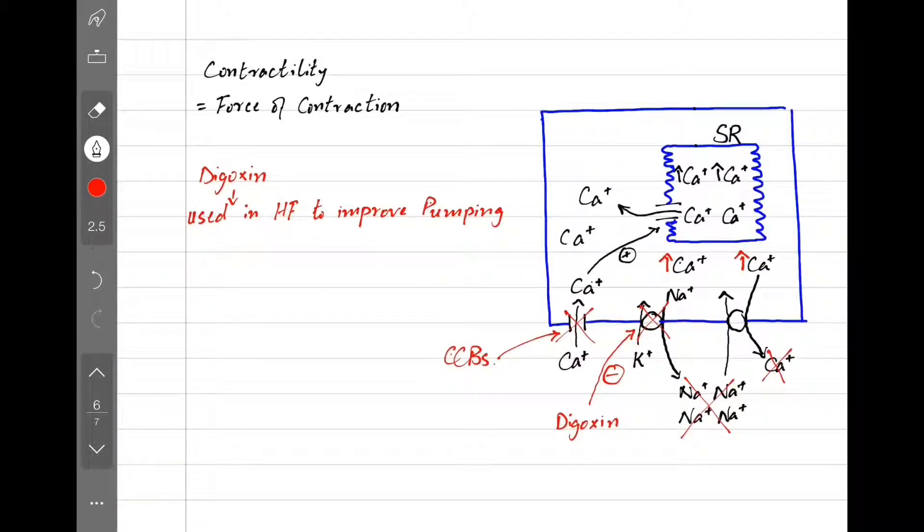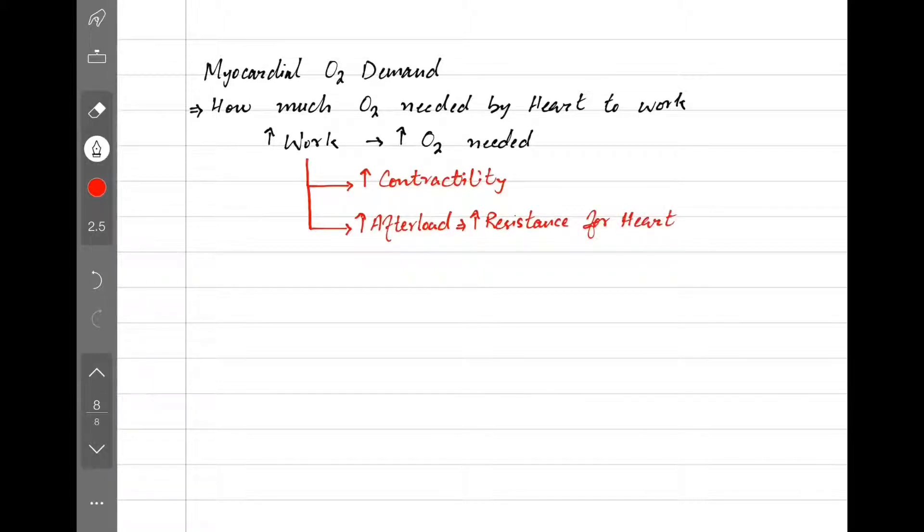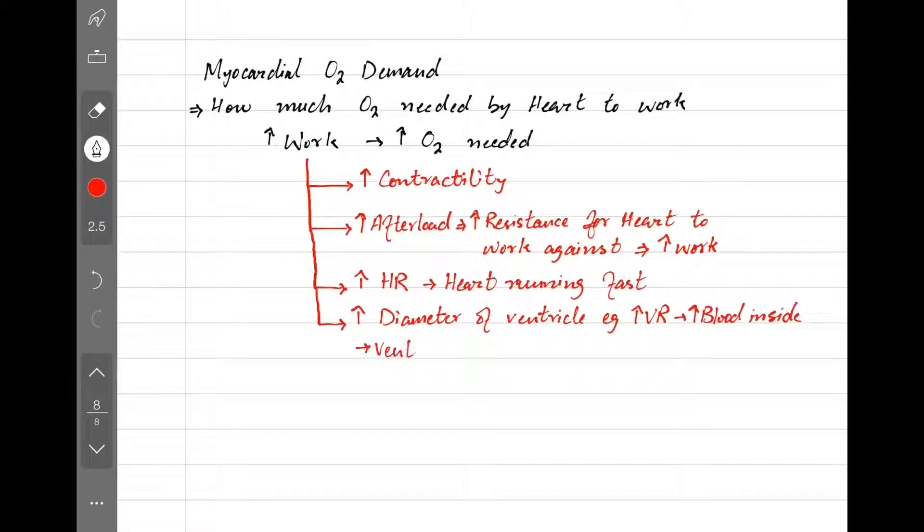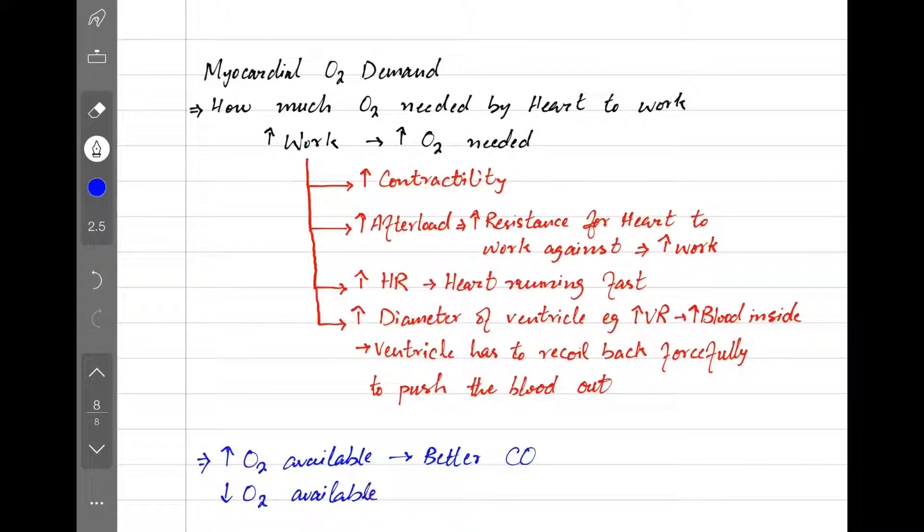The last variable to affect cardiac output is myocardial oxygen demand, which is how much oxygen is needed by the heart to work. More work means more oxygen needed. For example, increased contractility means more work. Increased afterload means more resistance for the heart to work against, and hence more work. Increasing heart rate means heart is running fast and more work. Increased diameter of left ventricle, seen after increasing venous return, means it has to recoil back forcefully to pump the blood out as per Starling's law. So when more oxygen is available, heart works better and we have a better cardiac output. When oxygen is low, we have a poor cardiac output.